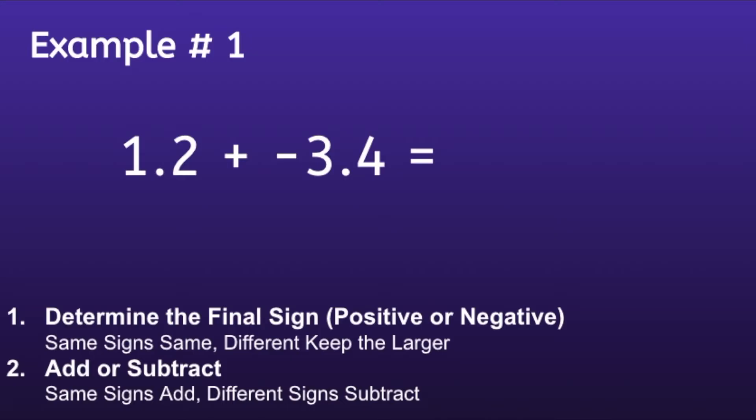1.2 plus negative 3.4. Step one: Determine the final sign. We want to determine if the answer is going to be positive or negative, and there's a phrase that can help us do that. That phrase is 'same sign same, different keep the larger.' If I look at my numbers, I have one positive number and one negative number, so we will use 'different keep the larger.'